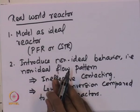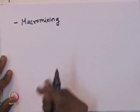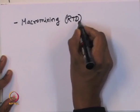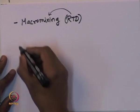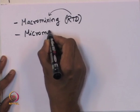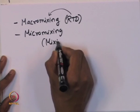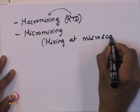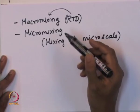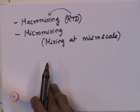Once we know the reactor behaves non-ideally, we need to account for two factors in the model. The first is macro mixing, which is basically the residence time distribution that captures macro mixing. The other is micro mixing — mixing at the micro scale. These two factors will help in characterizing the non-ideal behavior of the reactor. Let us first look at the residence time distribution, which accounts for macro mixing.